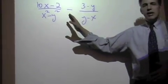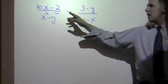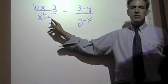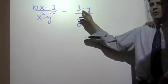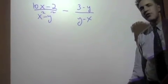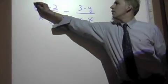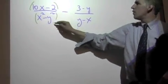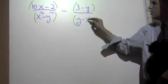Okay, this one is a tough question. 10x minus 2 over x squared minus y squared minus 3 minus y over y minus x. First step, always parentheses around all those nasty binomials. You never know what they could do.